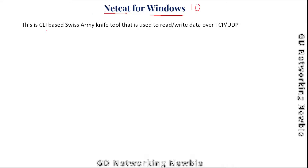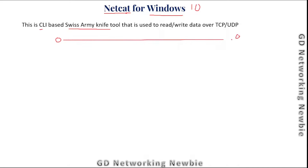Netcat is a CLI-based, command line interface based, Swiss Army knife tool. It is used to read or write data over TCP or UDP connections, meaning two computers can communicate with each other over a TCP or UDP port.